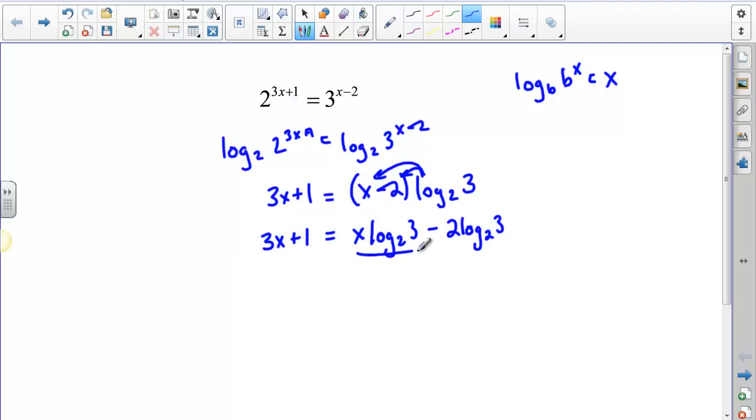Now I have this x log base 2 of 3 and a 3x here. I need to get those on the same side. So I'm going to do this in two steps. I'm going to first say subtract 1 from both sides, and I'm going to subtract x log base 2 of 3 from both sides. When I do that, the left side now is 3x minus x log base 2 of 3. And the right side is now negative 1 minus 2 log base 2 of 3.